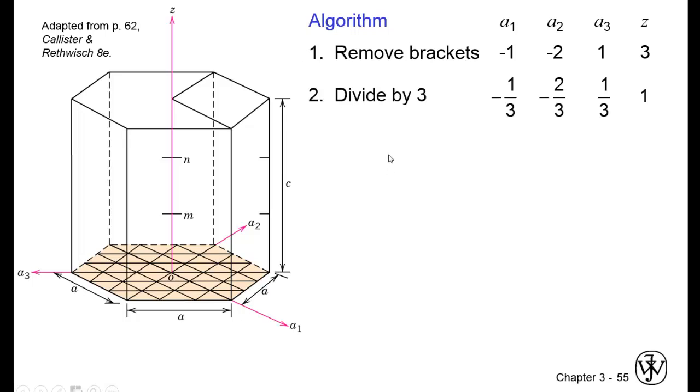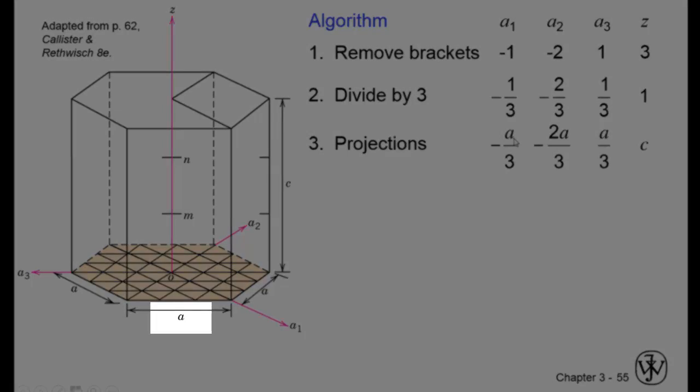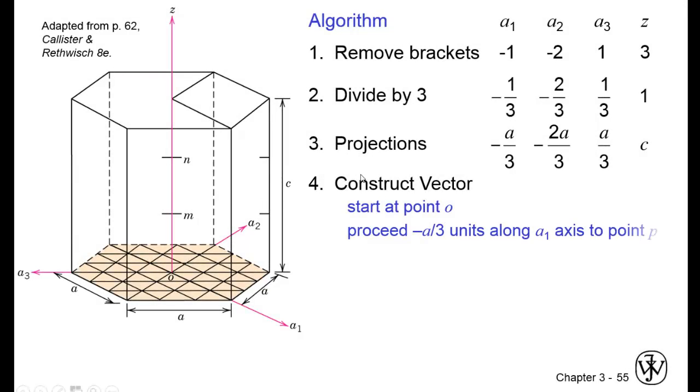Then we're going to divide by three, the largest value here. So we're kind of going backwards on how to find them from the previous cubic structures we were discussing in the previous lecture. Then we multiply by these projection A. And for Z, we multiply by C. And then we simply construct them.